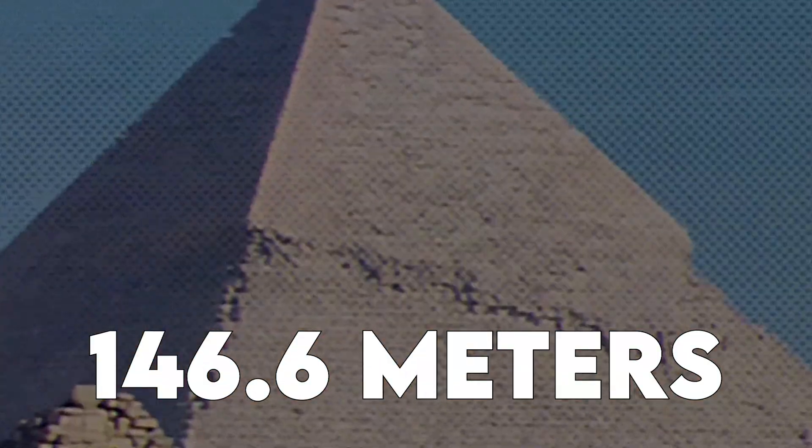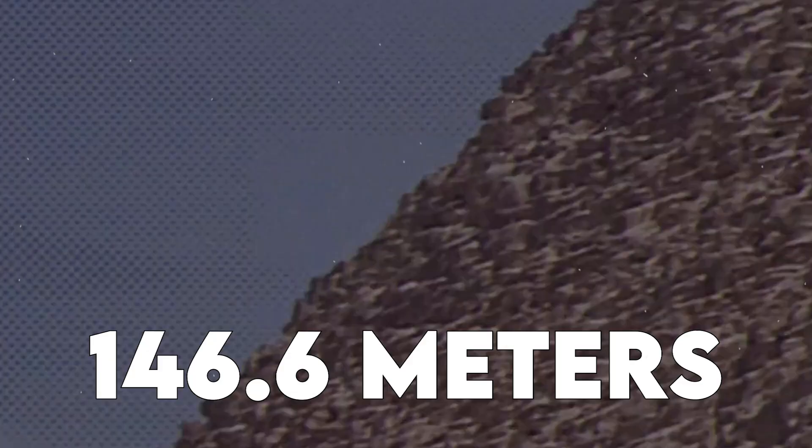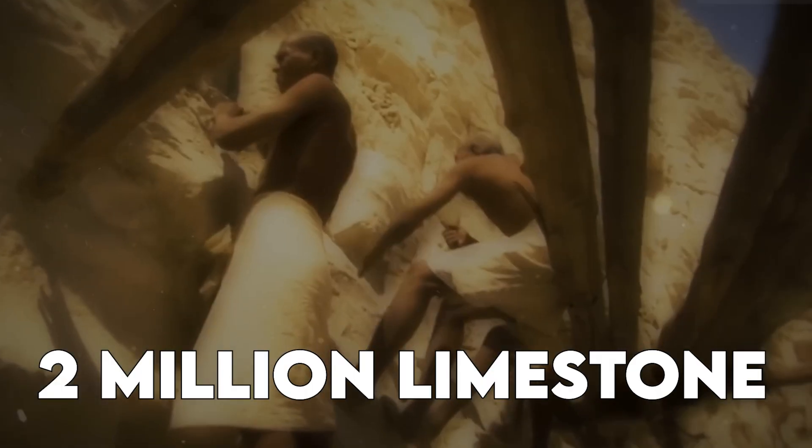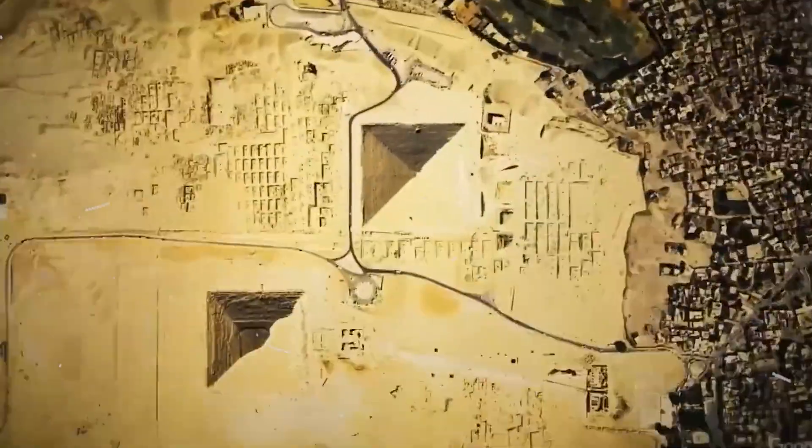This massive structure originally stood at about 146.6 meters, although it is slightly shorter now due to erosion and the loss of its outer casing stones. It was made up of over 2 million limestone and granite blocks, each weighing between 2 to 15 tons.